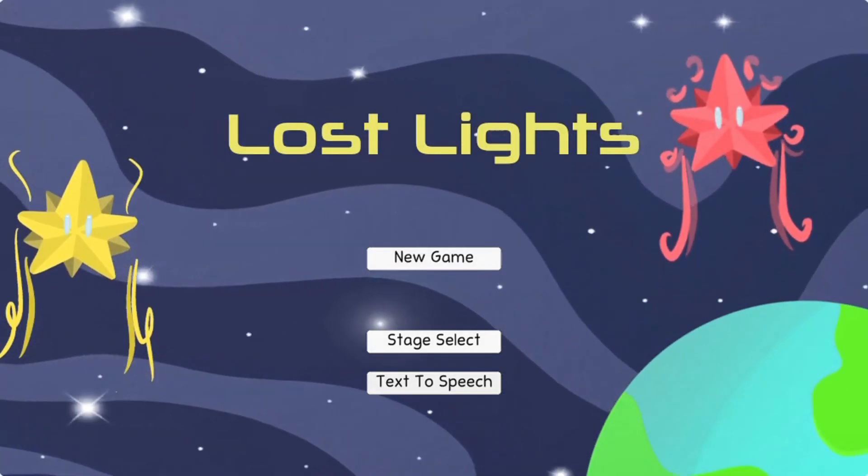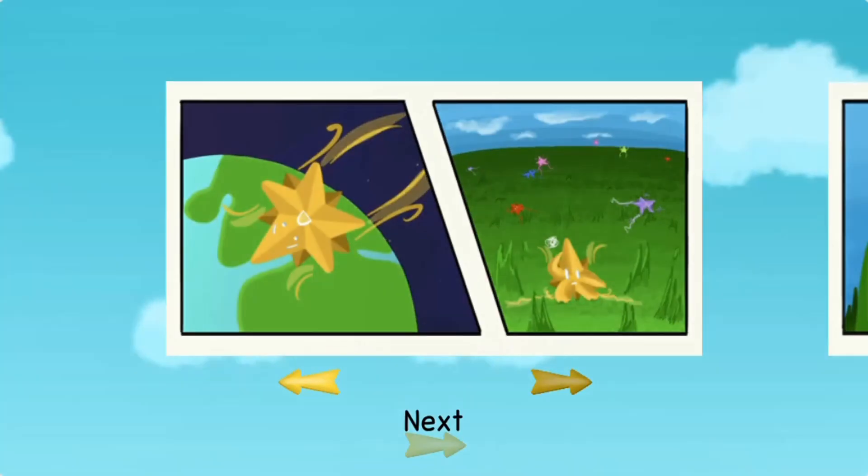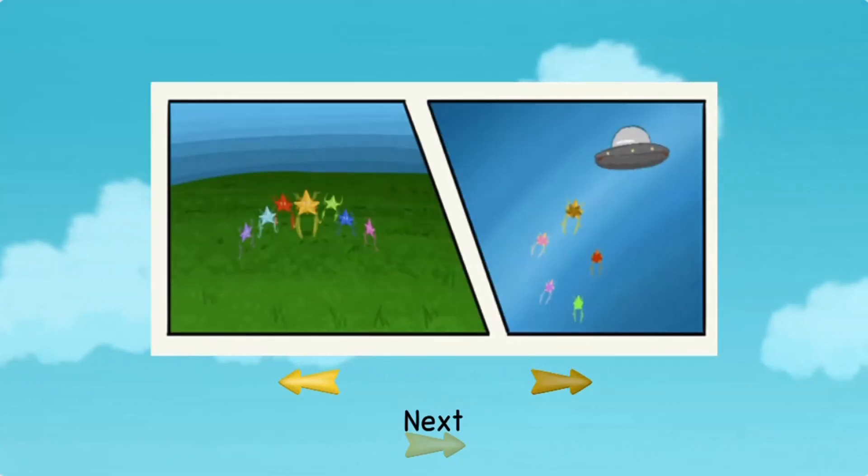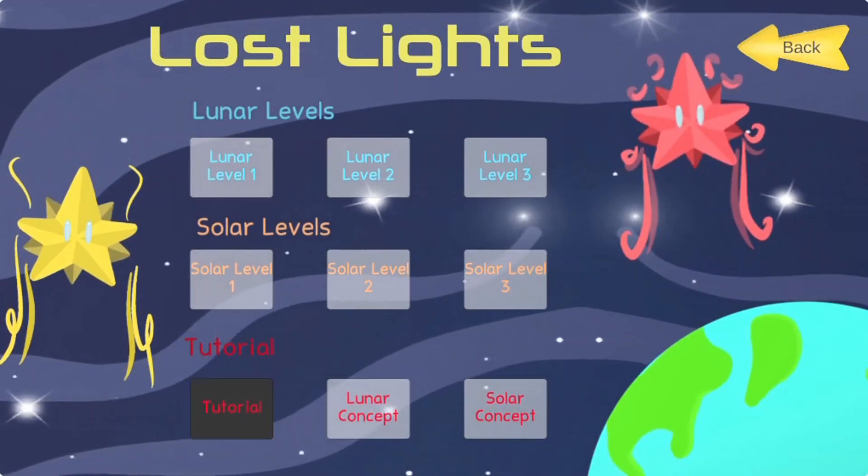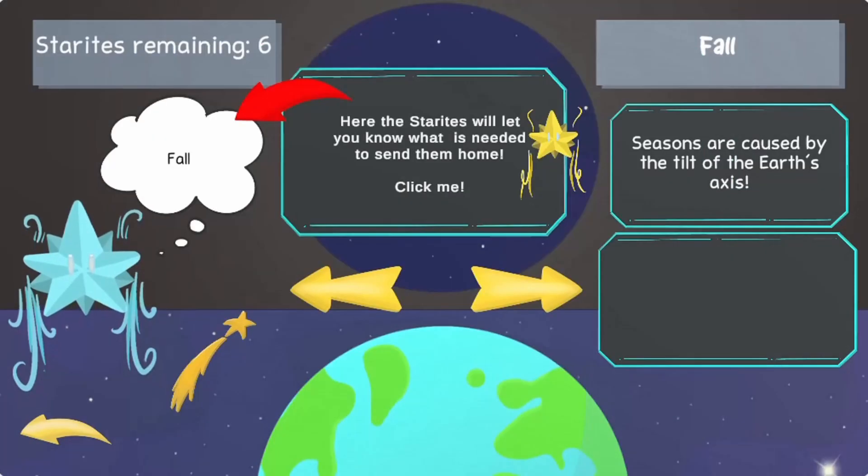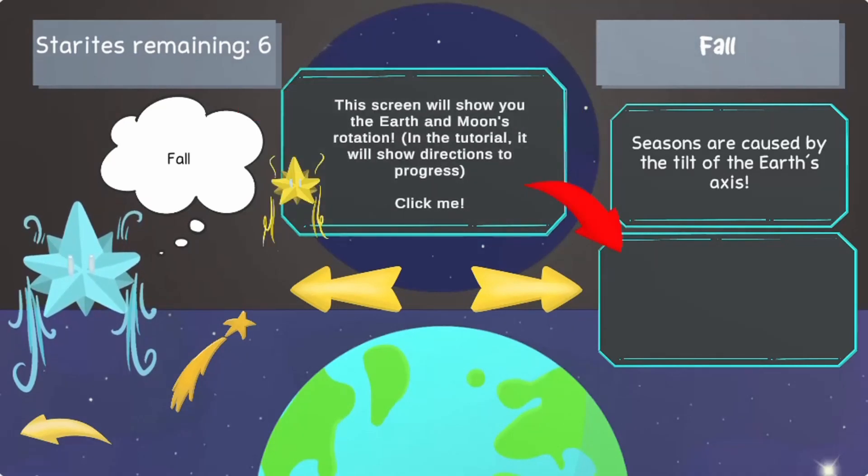Legends of Learning presents The Lost Lights game. This is a science game that makes learning about eclipses and seasons fun and easy to understand.